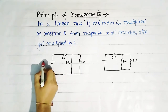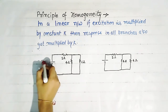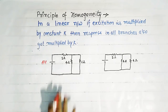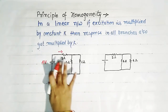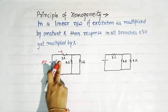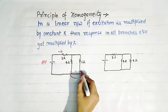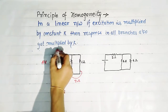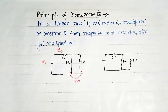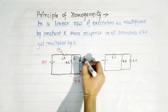Suppose this is a 4 volt voltage source. The current here will be equals to — the equivalent resistance is 4 parallel with 2 ohm, and 2 plus 2 is 4 ohm — so the current is 1 ampere.